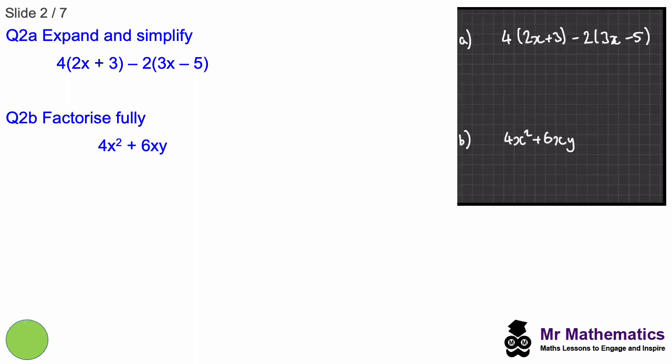We're going to expand and simplify the expression in part a, which is this expression here. We'll begin by expanding the two pairs of brackets. The first thing we'll do is multiply the 4 by the 2x, which gives us 8x. We'll have the 4 times the positive 3, which gives us 12. And then for our next pair of brackets, I'm going to draw a circle around this negative 2. Don't forget to multiply by the negative for each term. We have negative 2 times 3x, which is minus 6x, and then negative 2 times negative 5, which is positive 10. So now we can simplify this expression by collecting the like terms. We have 8x take away 6x, which is 2x, and 12 add 10, which is 22. So this is our simplified expression.